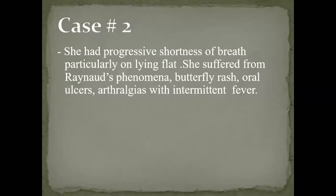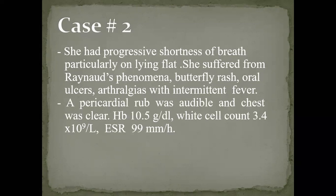She has progressive shortness of breath, particularly on lying flat. She suffered from Raynaud's phenomenon — a vascular phenomenon causing pallor, then bluish discoloration, followed by rebound hyperflow causing erythema and swelling. She also has oral ulcers, arthralgia, and intermittent fever. A pericardial rub is audible on auscultation and her chest is clear.